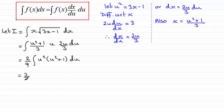And then that's all integrated with respect to u. So I just need to now expand the bracket here, and we've got 2/9 times the integral of u to the power 4 plus u squared. A couple of terms there, so I'll bracket those, and that's all integrated with respect to u.